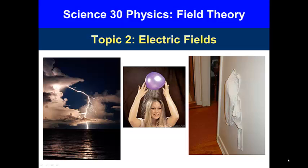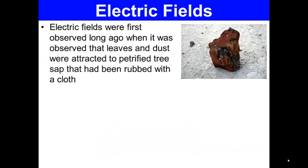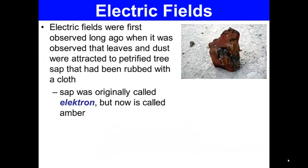Welcome to topic two, electric fields. Electric fields were first observed long ago when it was observed that leaves and dust were attracted to petrified tree sap that had been rubbed with a cloth. Sap was originally called electron, but it is now called amber.